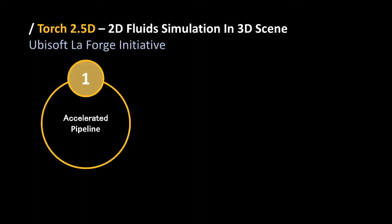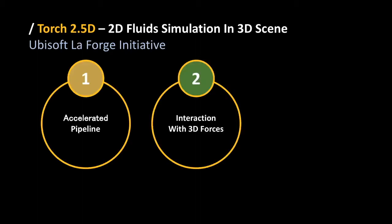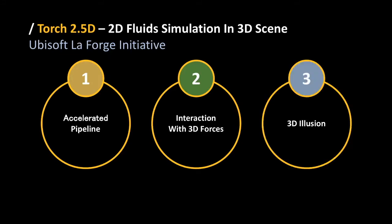At La Verge, we are working on Torch 2.5D, which is a 2D fluid simulation in a 3D scene. We have developed techniques to accelerate the pipeline, a system that allows for reinterpreting the 3D forces in the 2D simulation space, as well as a number of rendering techniques to create a 3D illusion.